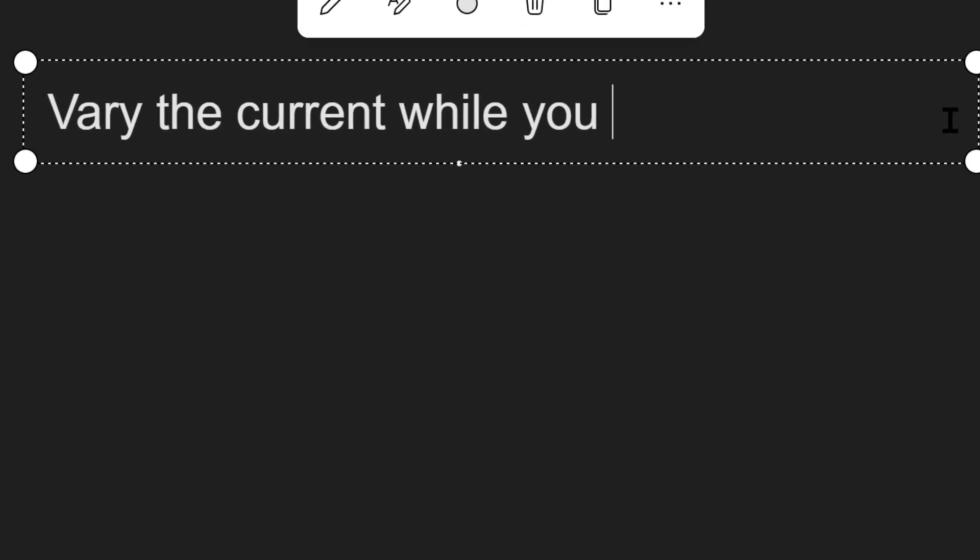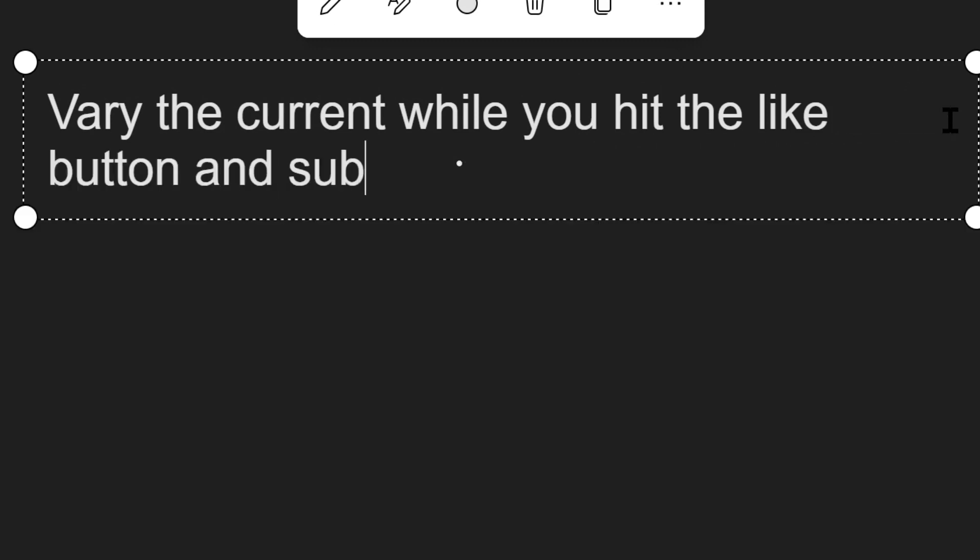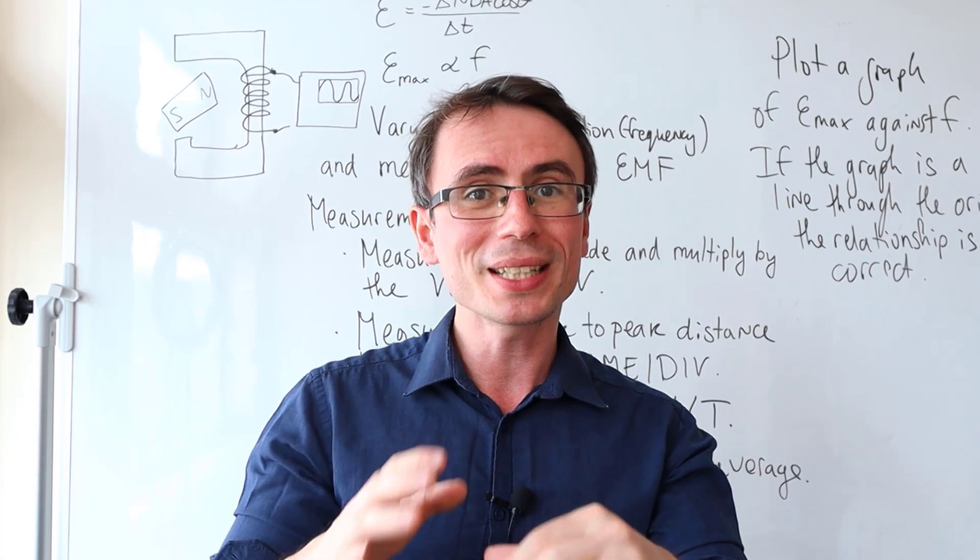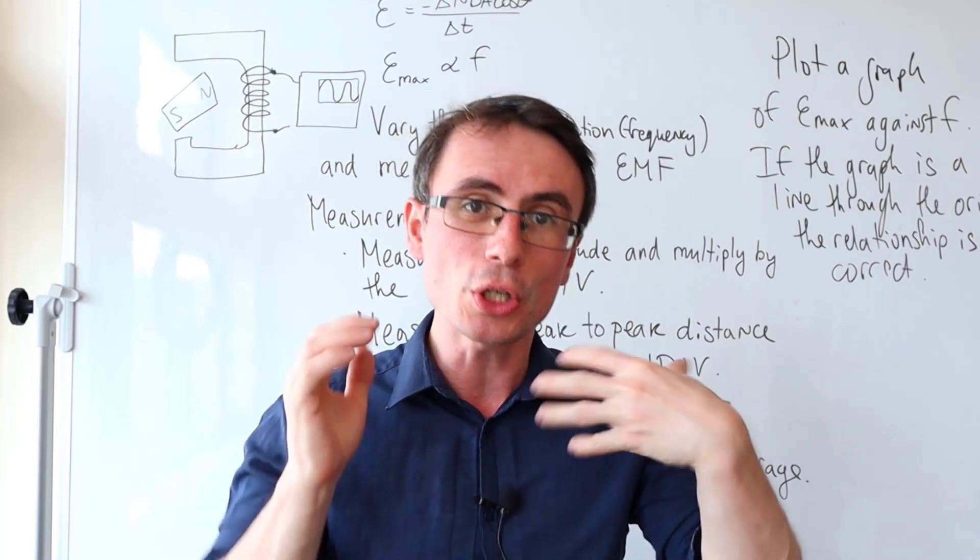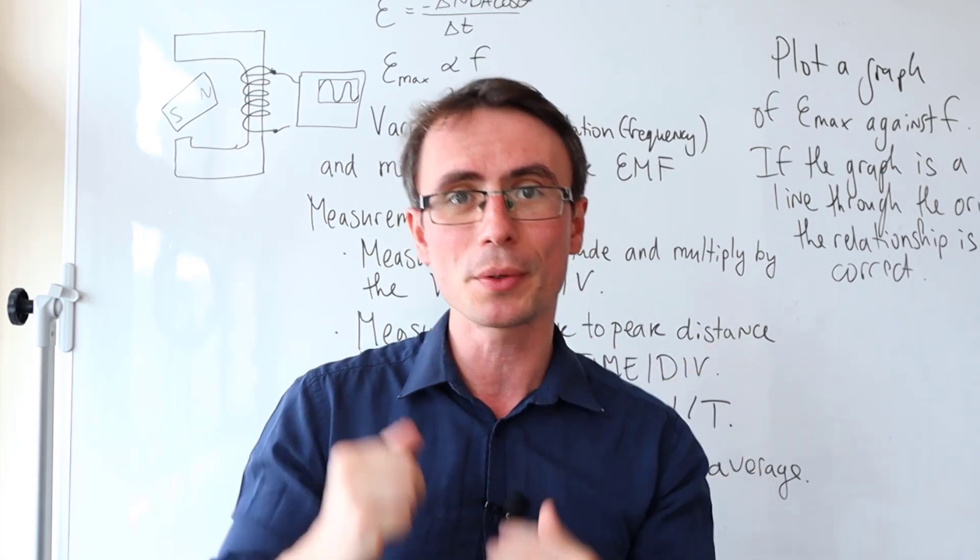On six marker experimental questions, remember to note which variable you're going to vary and which variable you're going to keep constant. Remember that if you're taking any measurements, you need to state what measuring instrument you will use.